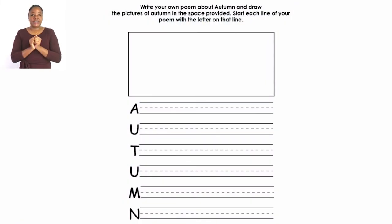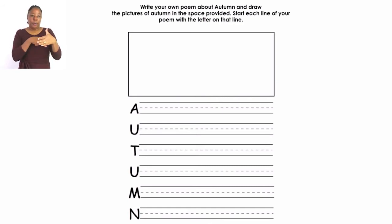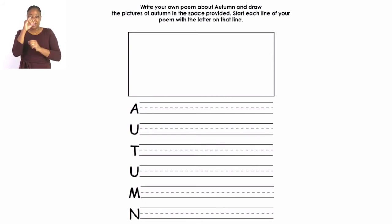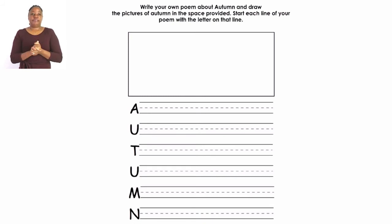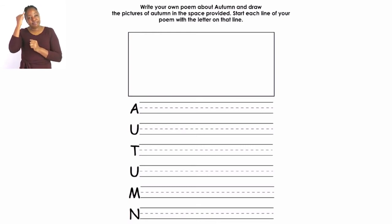On page 29 there is an instruction that says: write your own poem about autumn and draw the pictures of autumn in the space provided. You know what autumn looks like — we have been talking about it the whole week. We have shared about the leaves, the wind, and what you can do during autumn, as well as what you can wear. I'd like you to please use your imagination as well as the things that you know about autumn. The other instruction below is to start each line of your poem